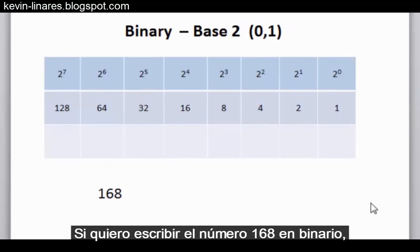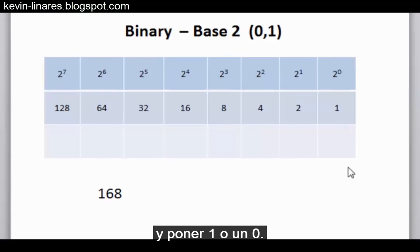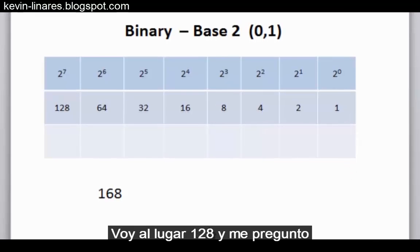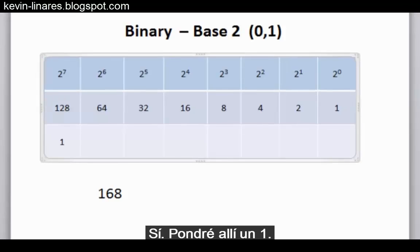If I want to write the number 168 in binary, I just have to find the corresponding place values and plug in either a 1 or a 0. So I'll go to the 128's place and ask myself, do I need 128 to reach 168? Yes, I do. So I'll put a 1 there.